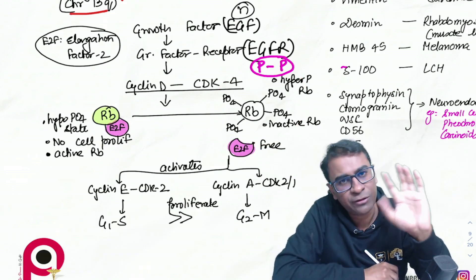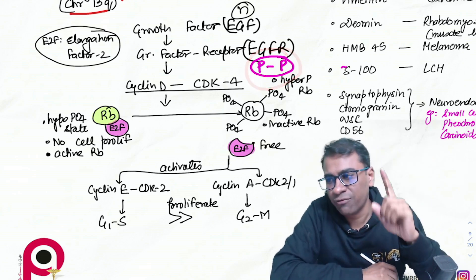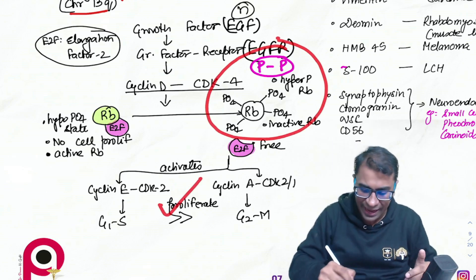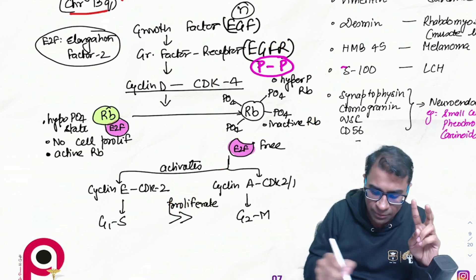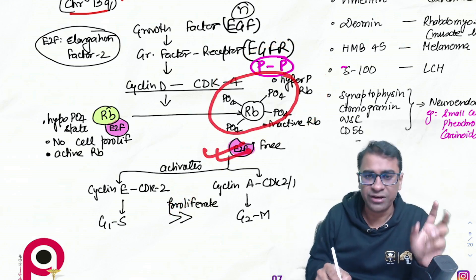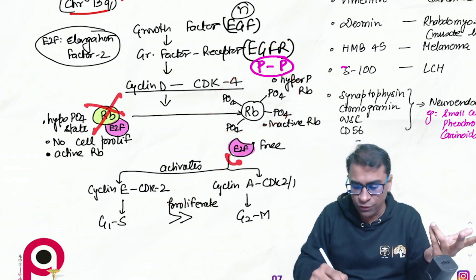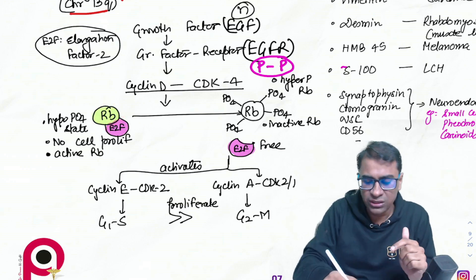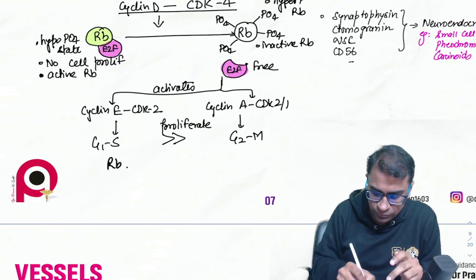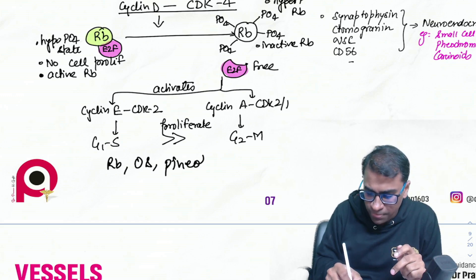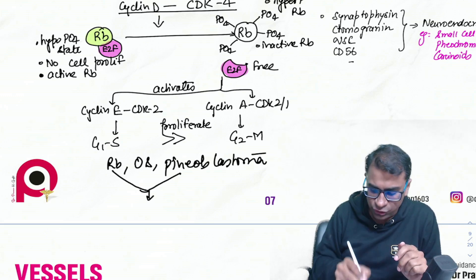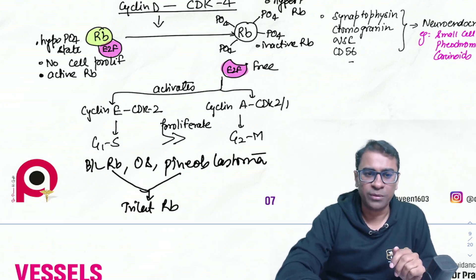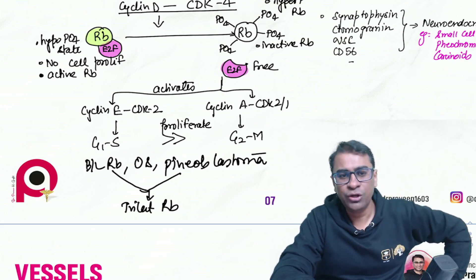If the RB gene is lost, E2F is always free, causing uncontrolled proliferation. Tumors associated with RB gene loss include retinoblastoma, osteosarcoma, and pinealoblastoma. A patient with bilateral retinoblastoma and pinealoblastoma is called trilateral retinoblastoma.